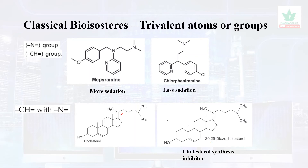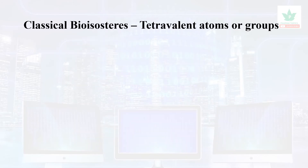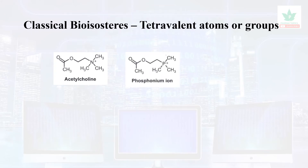The compound 20,25-diazacholesterol is a cholesterol synthesis inhibitor. For tetravalent groups, acetylcholine's quaternary ammonium group could be interchanged with a phosphonium ion or arsenium ion — however, when interchanged with arsenium ion, the compound is more toxic.